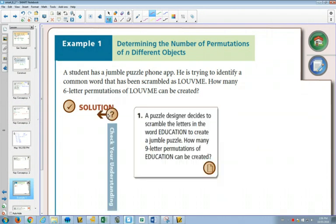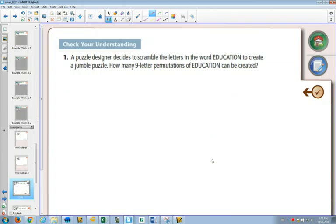So here's example 1. A puzzle designer decides to scramble the letters in the word education. Love the word education. Education is a beautiful English word because it has all 5 vowels in it. It has E, it has A, it has U, it has I, it has O, it has all 5 and only once. It doesn't have Y because Y is only a vowel sometimes. The shortest English word that has all 5 vowels only once has 7 letters. So I'll let you try and figure out what that word is. That's a little puzzle.